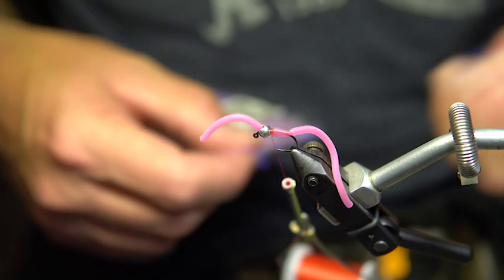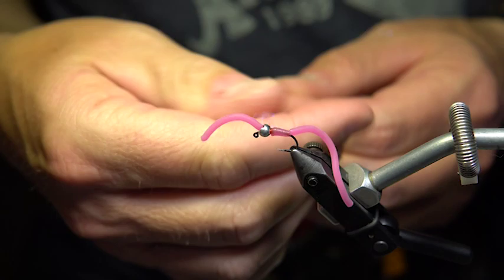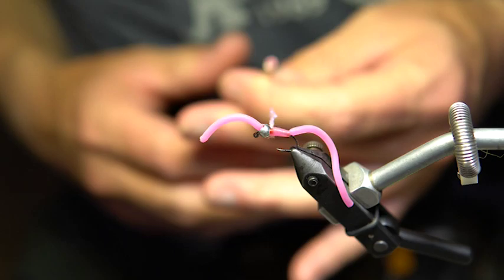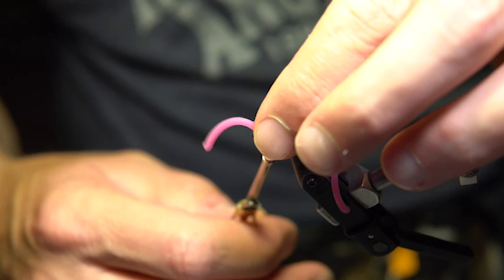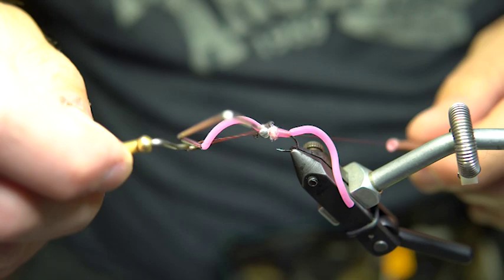To finish it, I take a little bit of dubbing. This is just a nice dub—this is UV pink. This is just to finish it off, a little bit of a hot spot. Again, a bunch of different colors, whatever. This one's been great for us. You're gonna make a bunch of different colors and tie them up—never know what's gonna be good. We're gonna go ahead and put that on the thread, and we're going to tie this guy in and whip finish it.